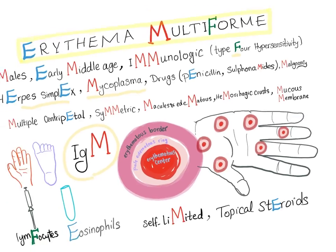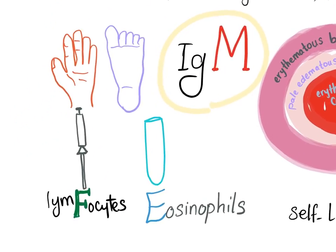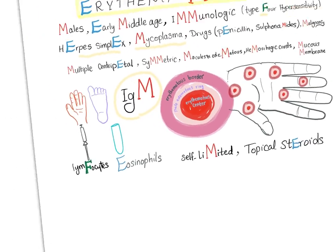Here are the lesions of erythema multiforme, which can be associated with mycoplasma. On skin biopsy, you will find lymphocytes. On blood labs, you will find eosinophils.